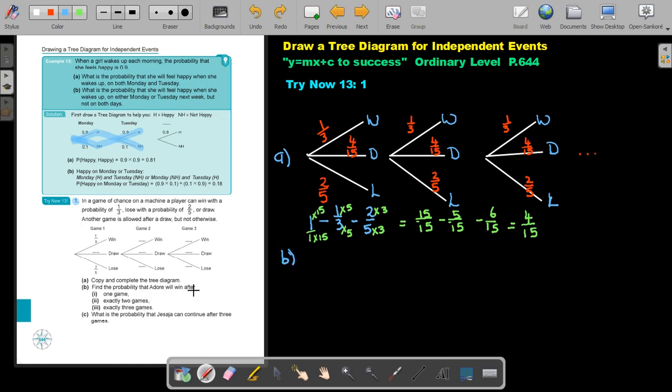Let's start with number B. Find the probability that Adore will win after one game. The probability win after one game. This is the first game. After the first game, the probability will just be the winning 1 over 3. It's actually the one they are giving you.